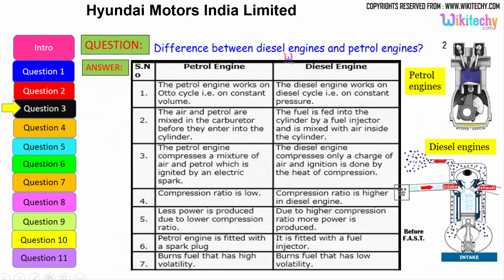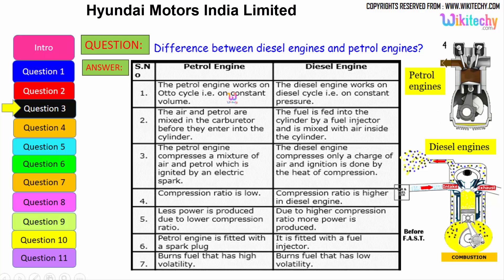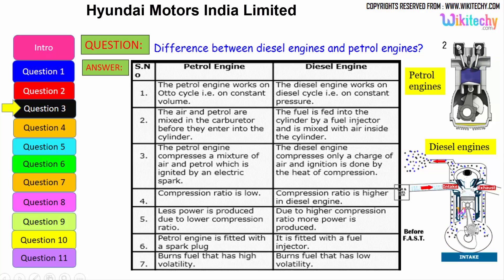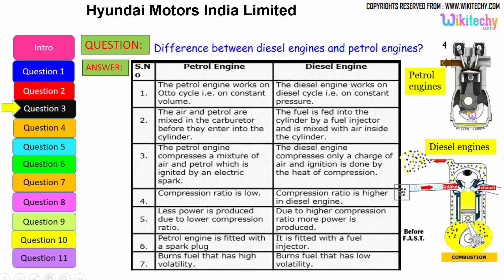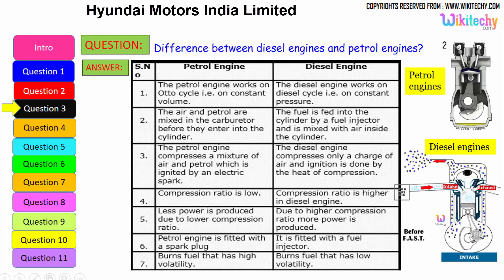Let us see the difference between the diesel engine and the petrol engine. The petrol engine works on the Otto cycle, therefore on constant volume, whereas the diesel engine works on the diesel cycle, on constant pressure. The air and petrol are mixed in the carburetor before they enter the cylinder, whereas in the diesel engine, the fuel is fed into the cylinder by a fuel injector and is mixed with the air inside the cylinder.